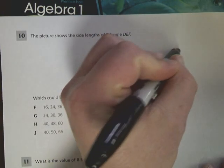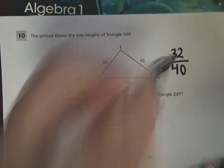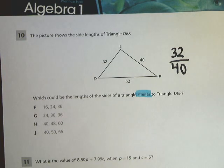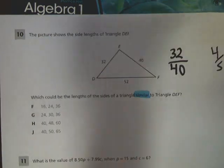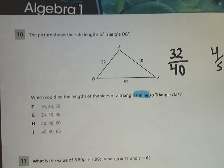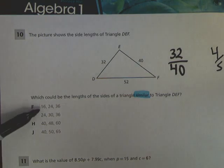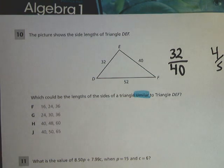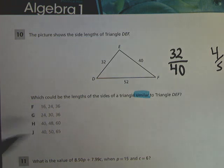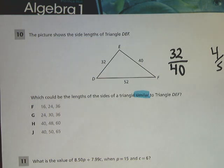I have the small sides being 32 over 40. If you reduce the fraction, it'll give you 4/5. We need to find another triangle that has the same relationships between its two smallest sides. The reason I chose the smallest sides is laziness really. The small sides are listed first in each triangle, so it's convenient.